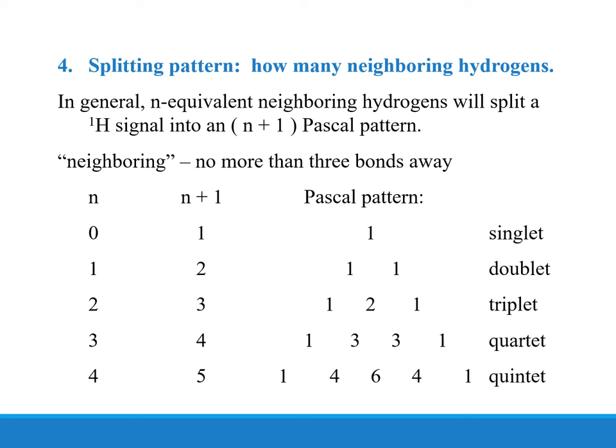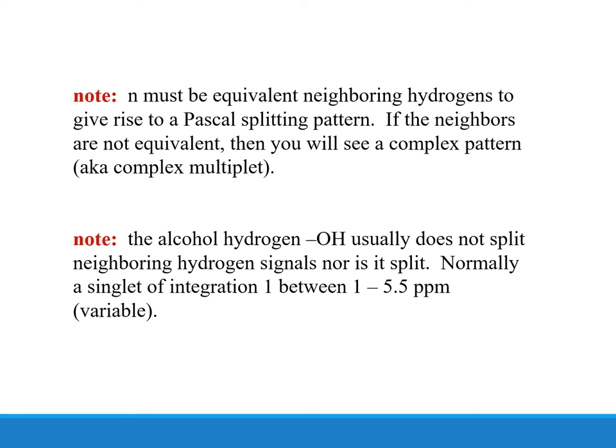A general overview shows how singlets, doublets, triplets, quartets, and quintets appear in the spectrum. Importantly, n must refer to equivalent neighboring hydrogens to give rise to the Pascal splitting pattern; if the neighbors are not equivalent, a complex multiplet results. Note that the alcohol OH hydrogen usually does not split neighboring hydrogen signals, nor is it split — it normally appears as a singlet with integration of 1, between 1 and 5.5 PPM, and this value is variable.